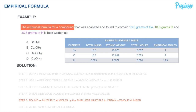Step 5 is to round or multiply all moles by the smallest multiple to obtain whole numbers. In this case, only hydrogen is not a whole number at 1.99. This is easily roundable — the general rule of thumb is that values within about 0.05 of a whole number can be rounded. So 1.99 rounds to 2. If a value is further from a whole number, we would need to multiply all values by some factor instead.